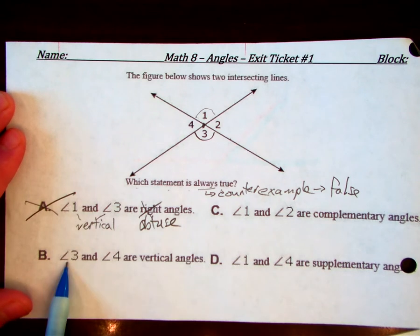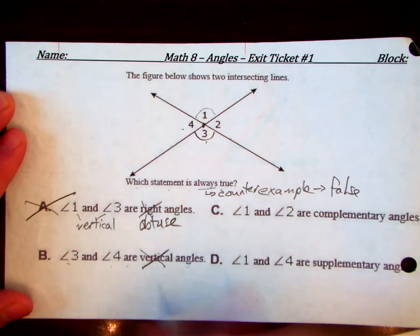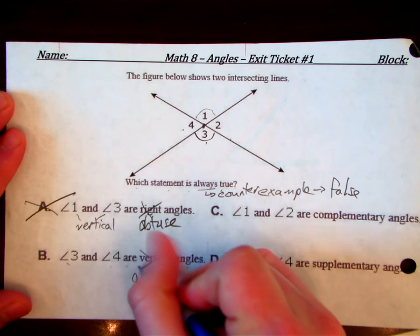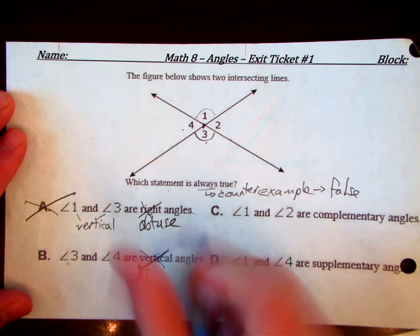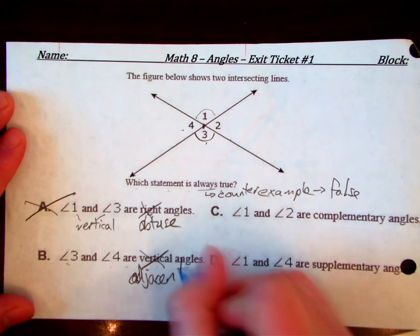For B, it says angle three and angle four are vertical angles. So let's see, angle three and angle four. Well, that can't be, right? Because they're not opposite of each other.